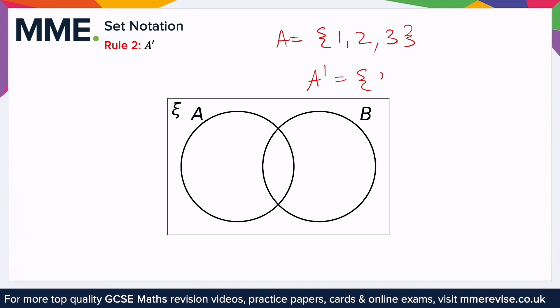So in this case, 4, 5, 6, 7, 8, 9, and 10. Because this still, if we put these two sets together, defines our whole set space.